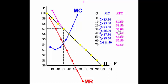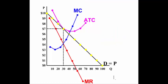Now let's put in an average total cost curve where the firm is just breaking even. Notice that the average total cost curve at seven dollars is tangent to the demand curve, and beyond that point it goes outside the demand curve. Marginal cost touches the average at its lowest point. Nowhere is average total cost below the demand curve. The monopoly is breaking even because total revenue is 210 dollars, average total cost is seven, and total cost is also 210, so economic profit equals zero.